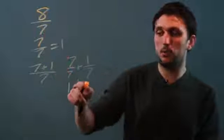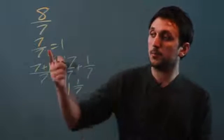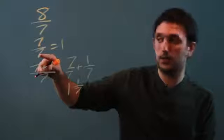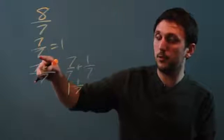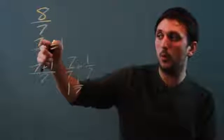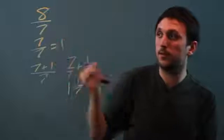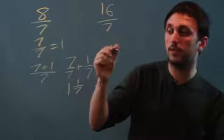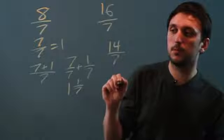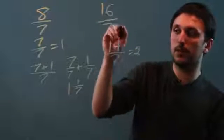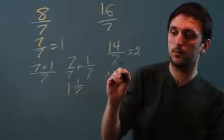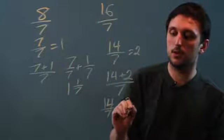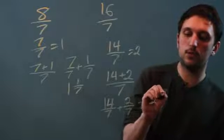So 8 sevenths becomes 1 and 1 seventh. Another way to think about it is to always look at the denominator. The reason I was able to call this 7 sevenths was because I looked at the denominator 7 and said 1 whole number will be 7 sevenths. If we had 16 over 7, then I would look for a multiple of 7, like 14 sevenths — so that would be 2. And I would be left with 14 sevenths plus 2 sevenths, or just 2 and 2 sevenths.